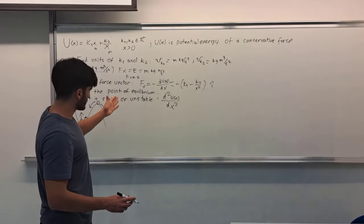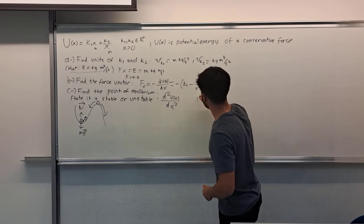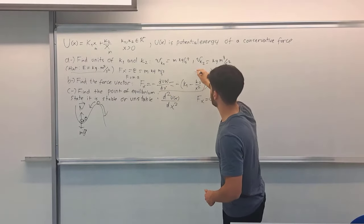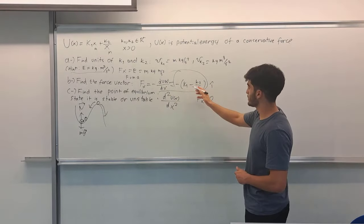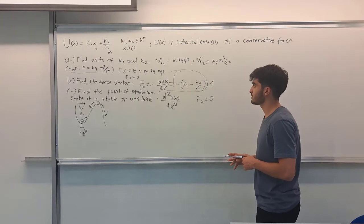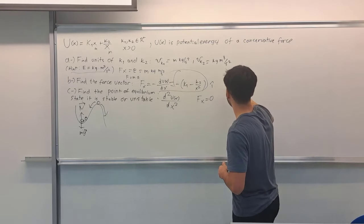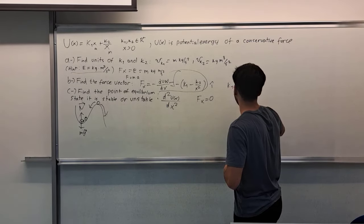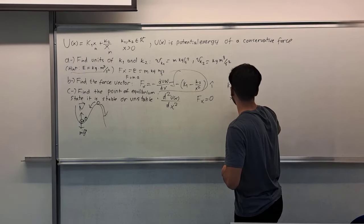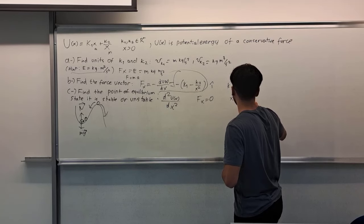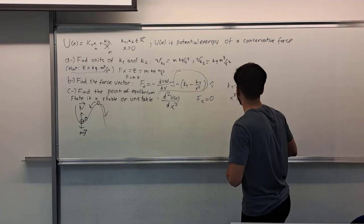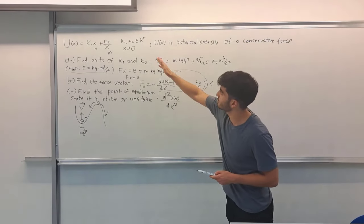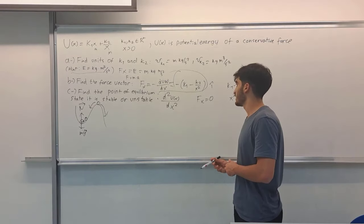So finding the equilibrium point, as I said, Fx should be equal to 0. I found Fx here, so this equation, in order to get this equation to 0, k1 minus k2 over x squared should be equal to 0. So this means x squared equals k2 over k1, and x is square root of k2 over k1. This is positive since it is giving us x greater than 0.